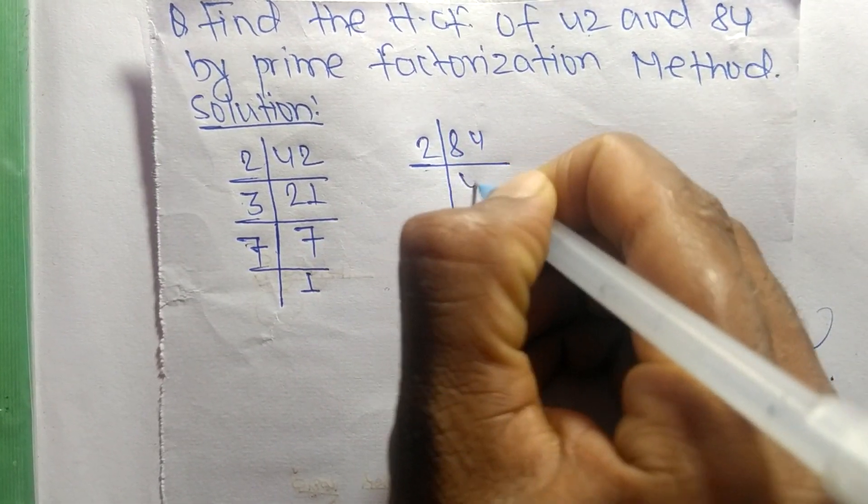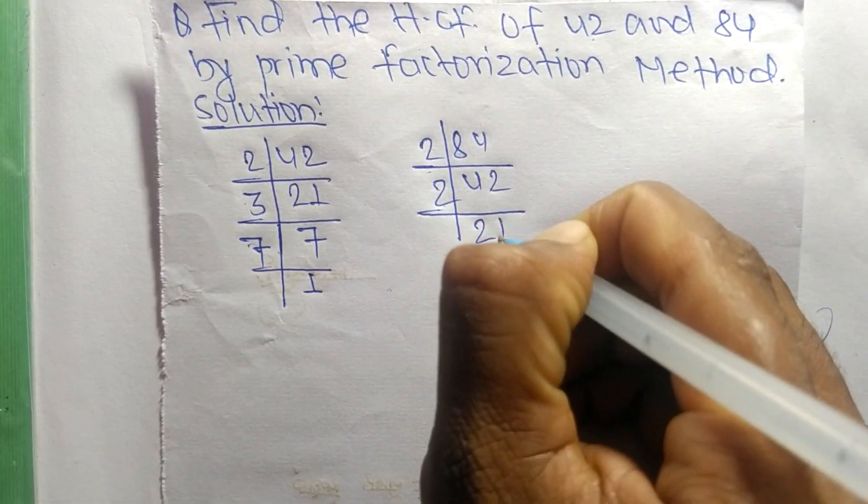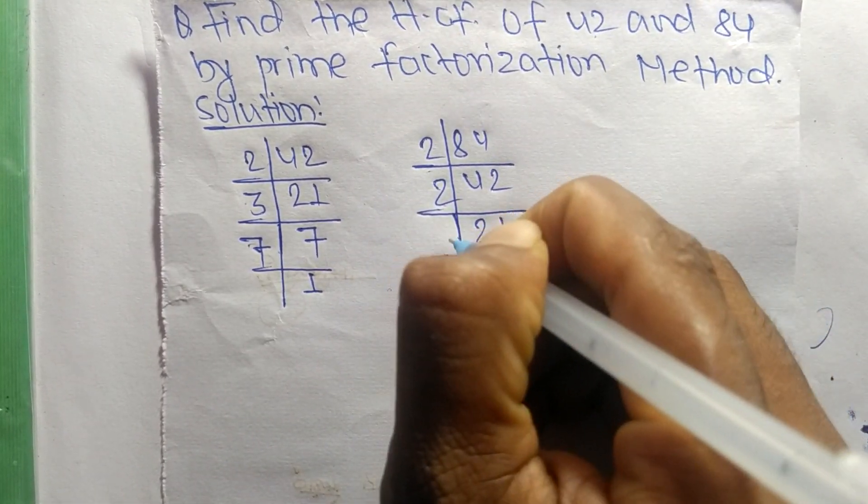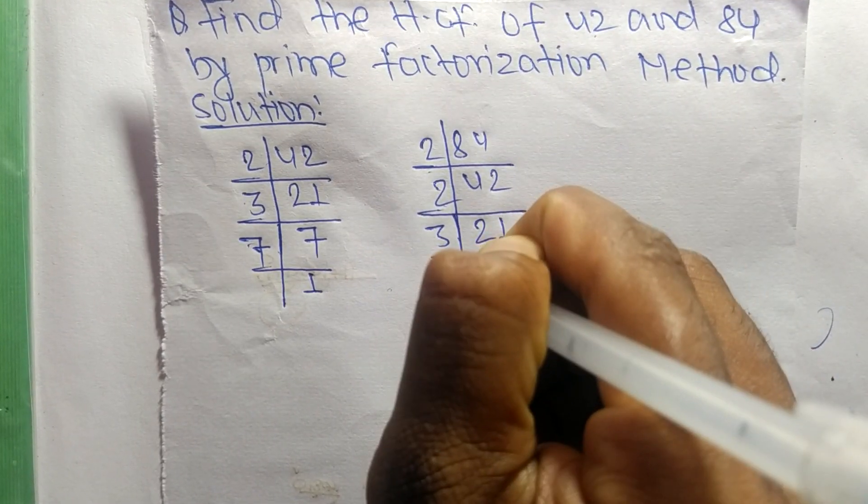The prime factors of 84 are: 2 times 42 equals 84, 2 times 21 equals 42, 3 times 7 equals 21, and 7 times 1 equals 7.